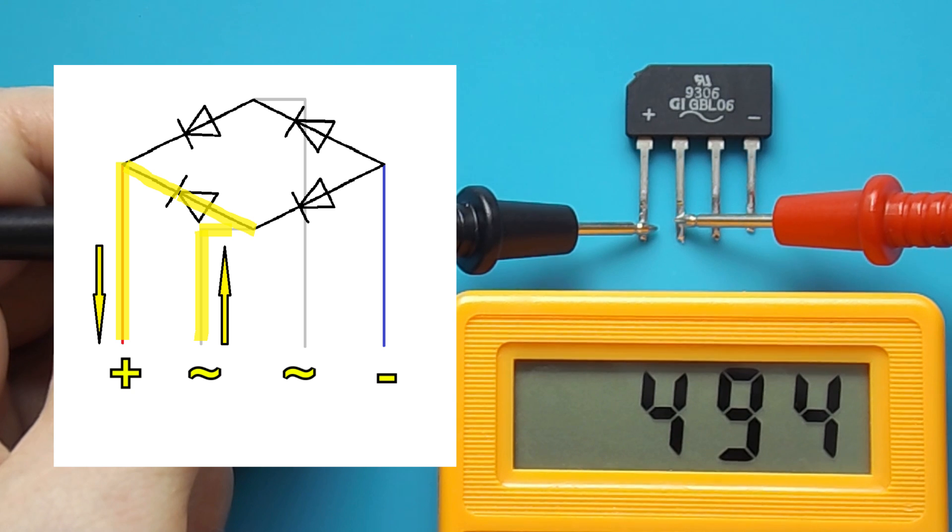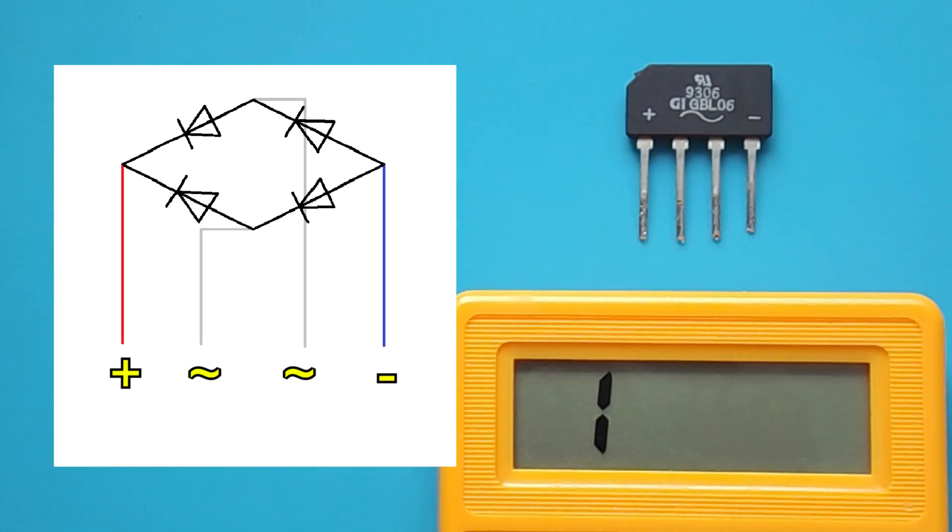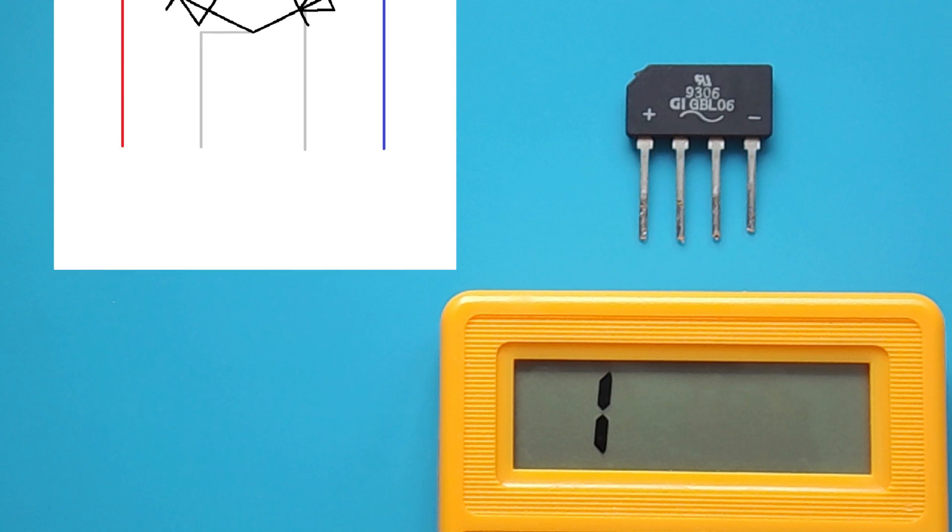Here too, the multimeter shows the voltage drop across each diode. On this, the test of the diode bridge can be considered completed.